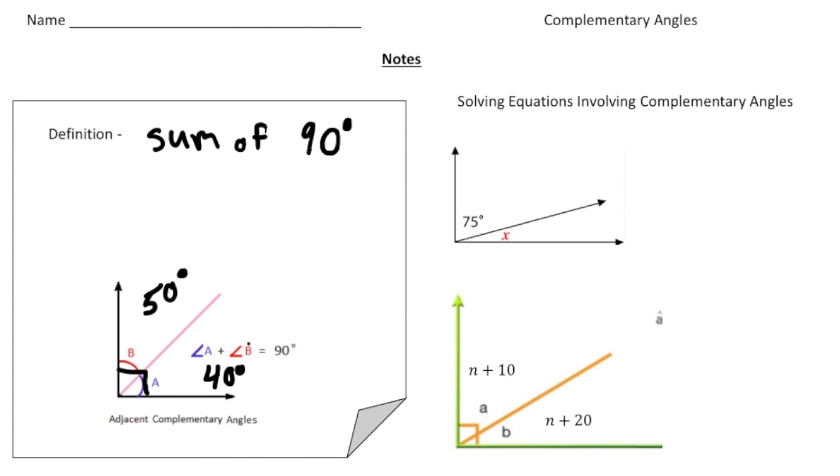So now that you know what Complementary Angles are, let's solve some equations involving Complementary Angles. So here we have two angles that are Complementary. We know together they add up to 90 degrees. So our equation is going to be x plus 75 equals 90. And then just take away 75 from both sides. And when you do that, you get x equals 15. That's the first one.